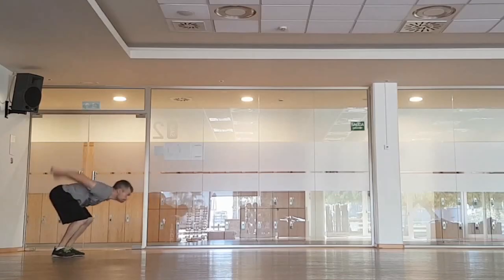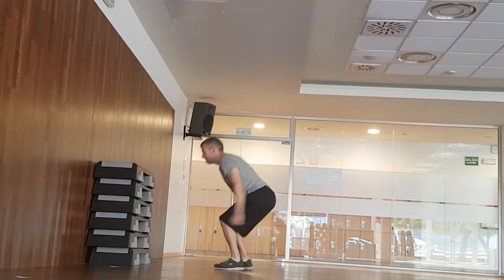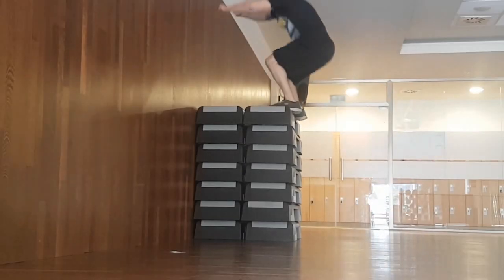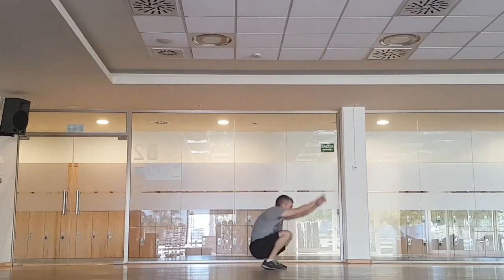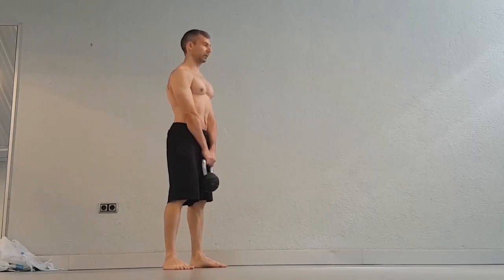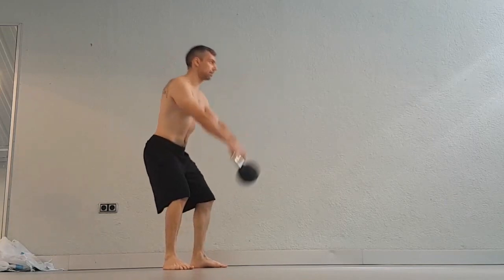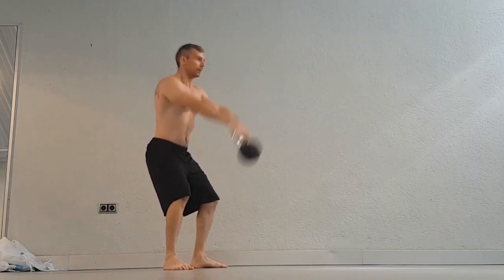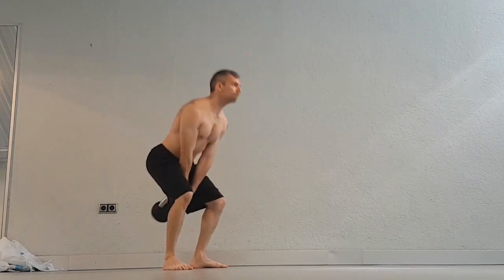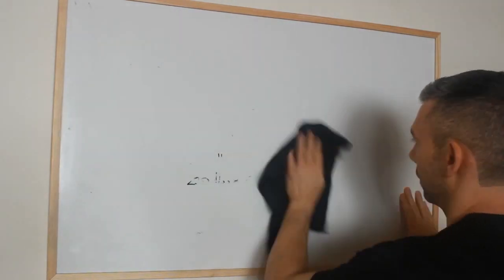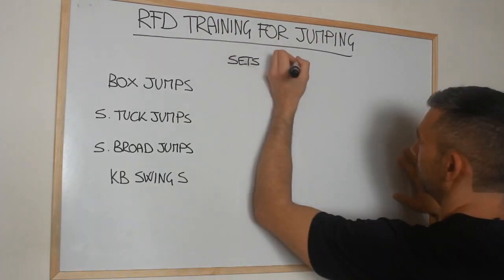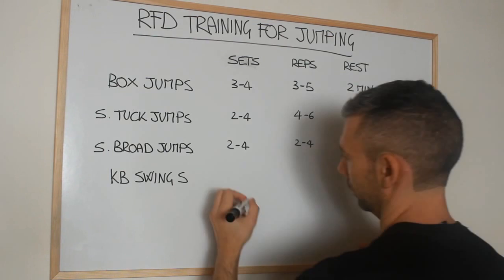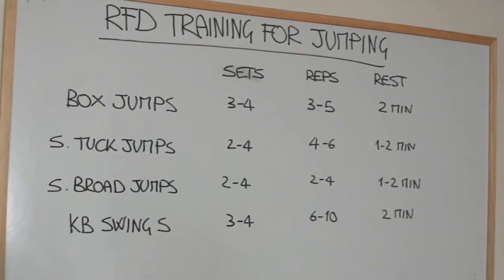Another way to increase rate of force development is to jump from a still position without using bouncing or a run-up. Box jumps are one of the best examples of these exercises, and you can use steps to add height and difficulty as you progress. Standing broad jumps and tuck jumps also fall into this category. A great exercise to increase power and explosivity is the kettlebell swing, which allows you to move explosively using the momentum of the weight, activating the muscles of the posterior chain in a similar fashion to jumping. When training these exercises, take long rests between sets — two minutes or even longer — doing no more than four or five sets of five to ten repetitions. Remember, you're training for explosiveness, not endurance, so allow plenty of rest and don't reach the point of fatigue.